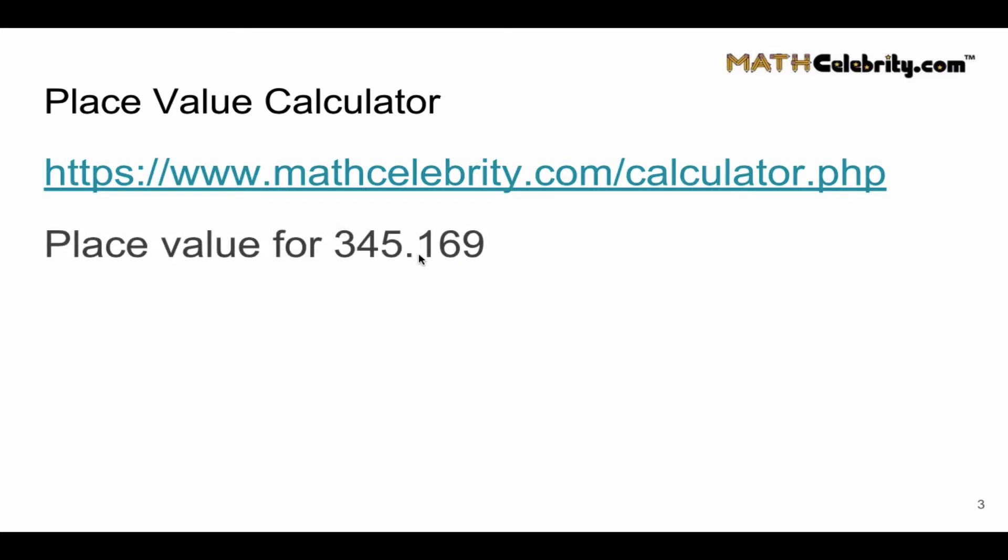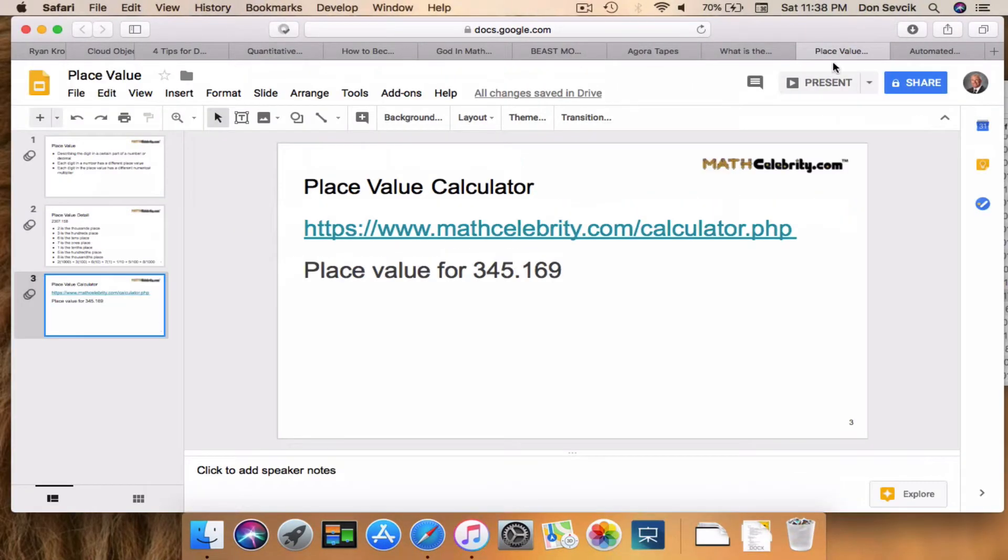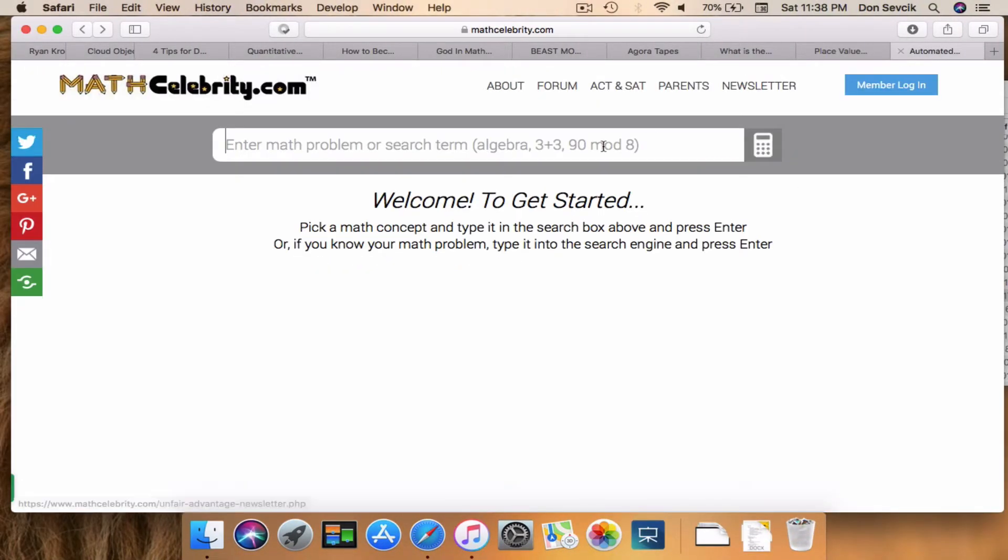So let's go to this link here. You're going to drop right in the search box here and you can type anything similar to 'place value for 345.1694' – we'll just make up a decimal – hit return, and boom!